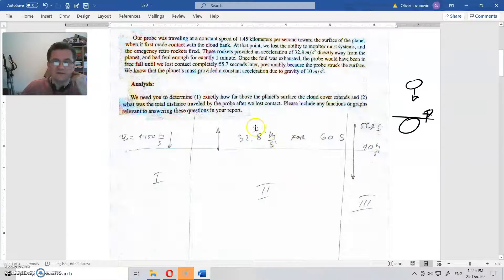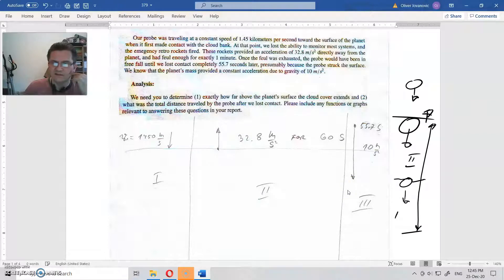It starts to brake with this kind of acceleration, but it moves straight down with less and less speed. That is happening for 60 seconds. After 60 seconds we lost the contact, and from there it still continues falling down under these conditions for 55.7 seconds. The question is what is this distance here. This is the second phase, and this is the third phase of the flight.